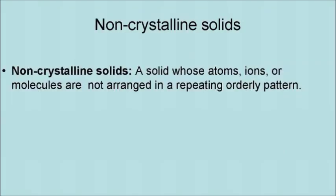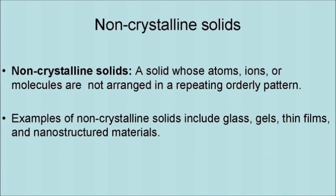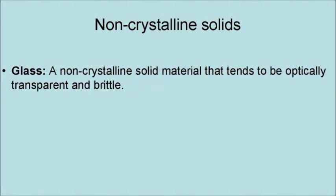A non-crystalline solid is a solid whose atoms, ions, or molecules are not arranged in a repeating orderly pattern. Examples of non-crystalline solids include glass, gels, thin film, and nanostructured material. Glass is a non-crystalline solid that tends to be optically transparent and brittle.